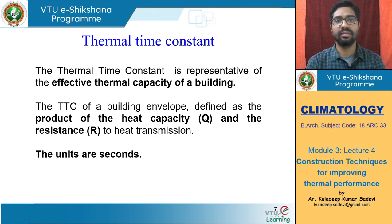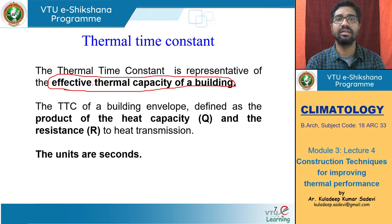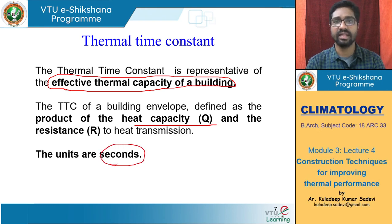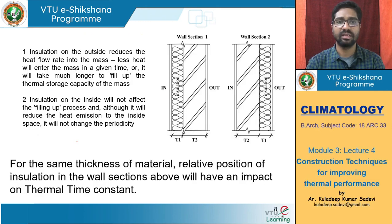There is also something called the thermal time constant. The thermal time constant is representative of the effective thermal capacity of the building — different components and layers — and what the total effective thermal capacity of the building is as a whole. The thermal time constant is defined as the product of the total heat capacity and the resistance to heat transmission. The units are seconds — how many seconds is the time constant.